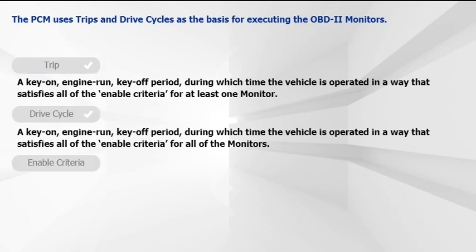The OBD2 drive cycle consists of various vehicle operating conditions such as idle, acceleration, cruise, and deceleration. In order for the PCM to recognize a drive cycle, the key must be operated in a way that satisfies all of the enabled criteria for each monitor within one key-on, engine-run, key-off series. Completing a drive cycle is necessary for all of the monitors to run, and the successful completion of a drive cycle will set the readiness status of the monitors to ready.